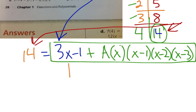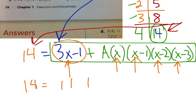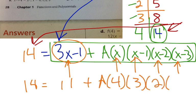And then what we need to do is plug 4 into each one of these spots and then solve for a. So then that's going to give us 14 equals, this part is going to be 3 times 4 minus 1, we already knew was 11, plus a times 4, times 4 minus 1 is 3, 4 minus 2 is 2, 4 minus 3 is 1.